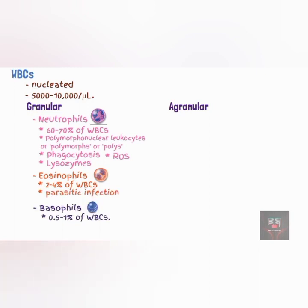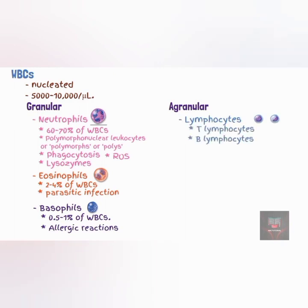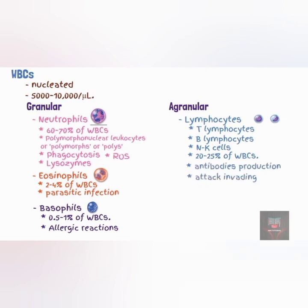The agranular leukocytes include the lymphocytes, examples of which include the T lymphocytes, the B lymphocytes, and the natural killer cells. They make up about 20 to 25% of the white blood cells in the blood. They mediate immune reactions, including antigen-antibody reactions. B cells develop into plasma cells, which secrete antibodies. T cells attack invading viruses, cancer cells, and transplanted tissue cells. Natural killer cells attack a wide variety of infectious microorganisms and certain spontaneously arising tumor cells.